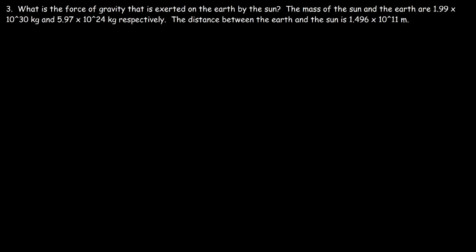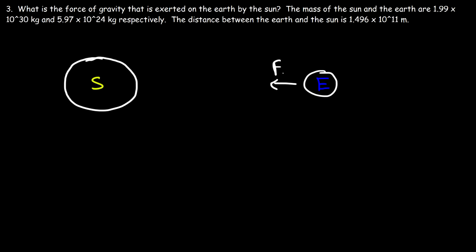Now let's work on this problem. What is the force of gravity that is exerted on the earth by the sun? We're given the mass of the sun and the earth and the distance between them. So let's say that's the sun and this is the earth. The sun is going to exert a gravitational force on the earth, pulling it toward itself, and the earth pulls the sun toward itself. Those two forces are equal in magnitude but opposite in direction. The distance between the center of the earth and the sun is 1.496 times 10 to the 11 meters.